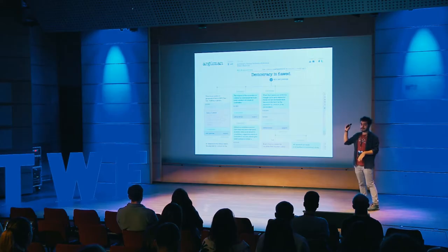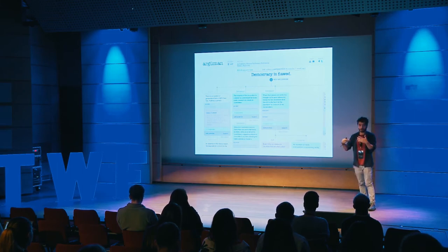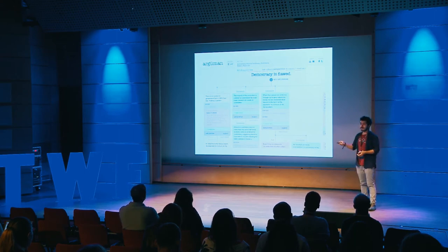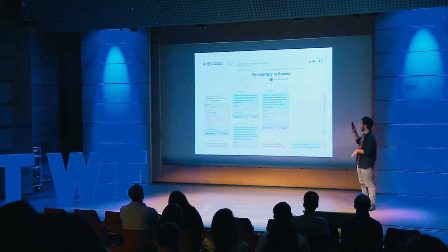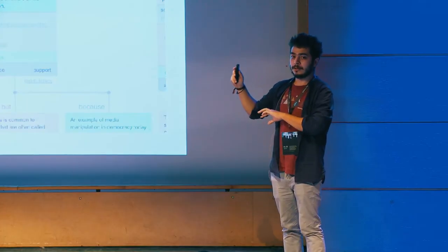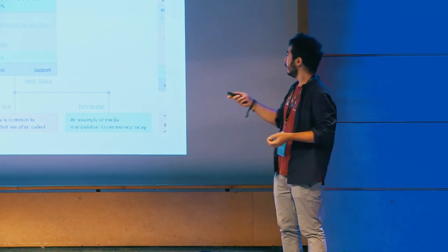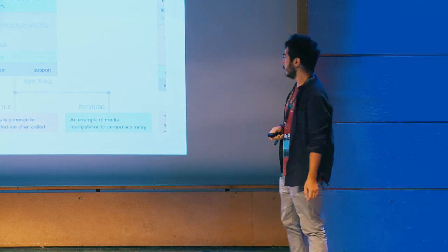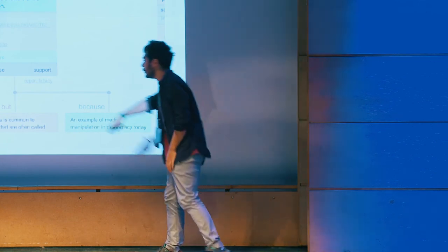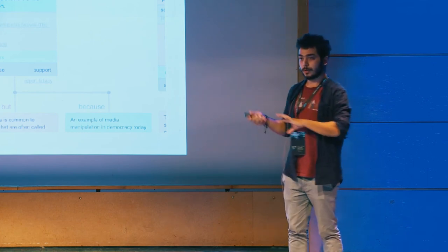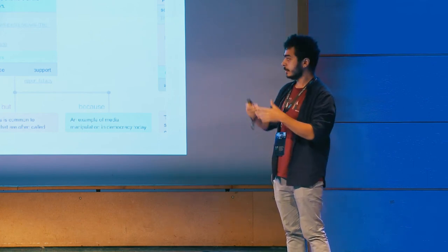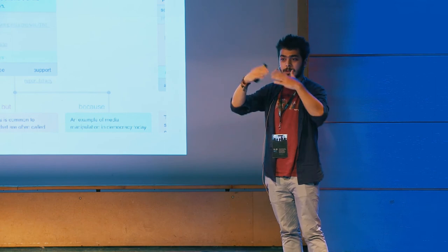You have an argument, like 'Democracy's flawed,' or in a programmer view, 'Tabs are better than spaces.' You are trying to prove your argument with 'because' premises. Then someone comes and tries to reject your argument premise with 'but.' The main view of an argument map looks like this, and it becomes a tree — sometimes very large trees.